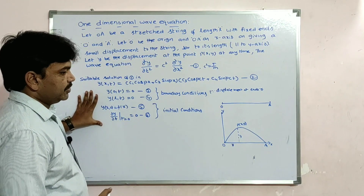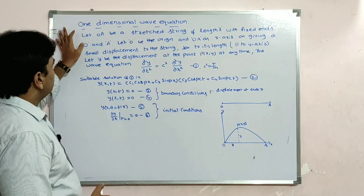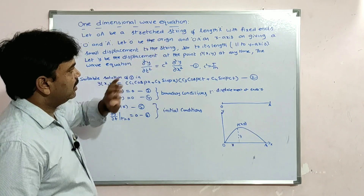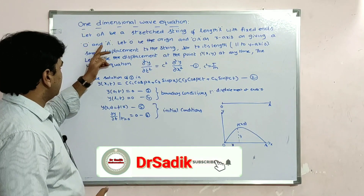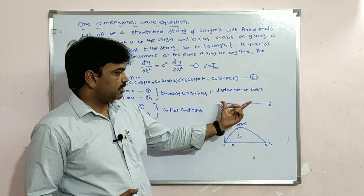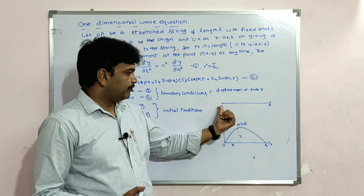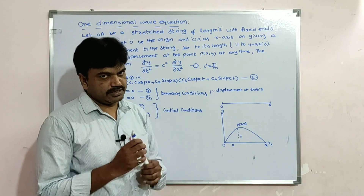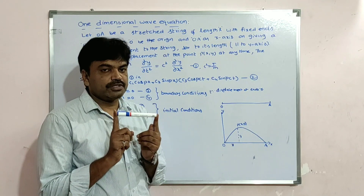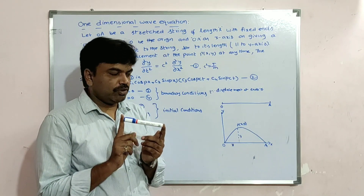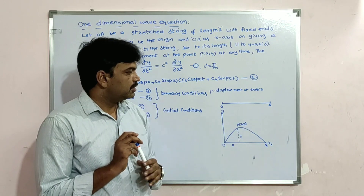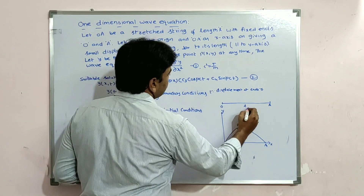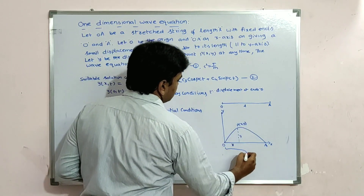Let OA be a stretched string of length L with fixed ends O and A. Take any string fixed at both ends O and A. We fix it at both ends — the first end is O and the endpoint is A.